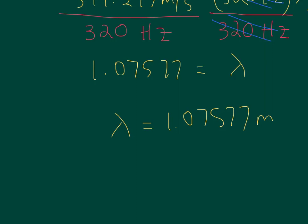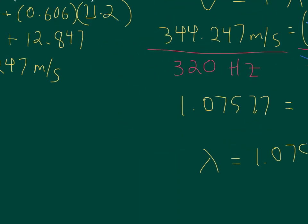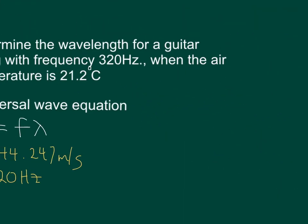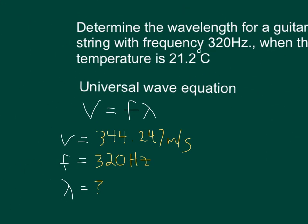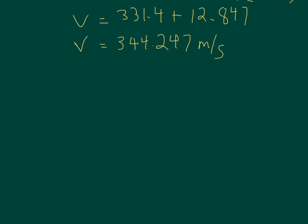Now we have to think about our significant digits. Go back to the original question. Right here we have two significant digits. Right here we have three. So our final answer really should only have two significant digits.